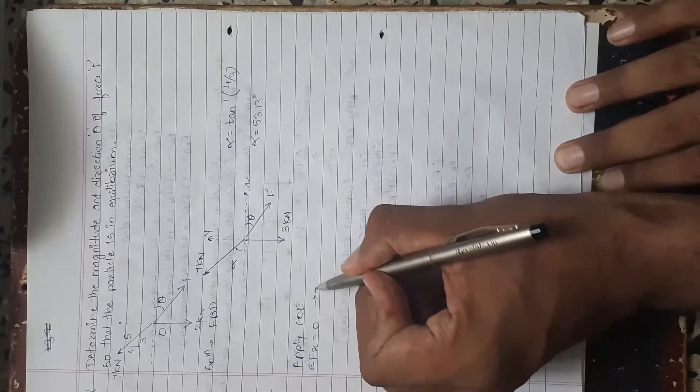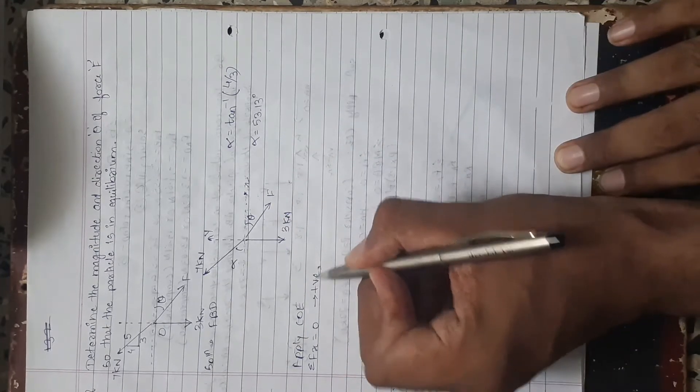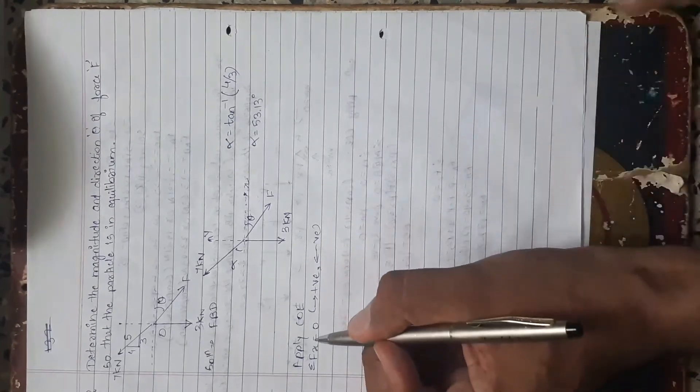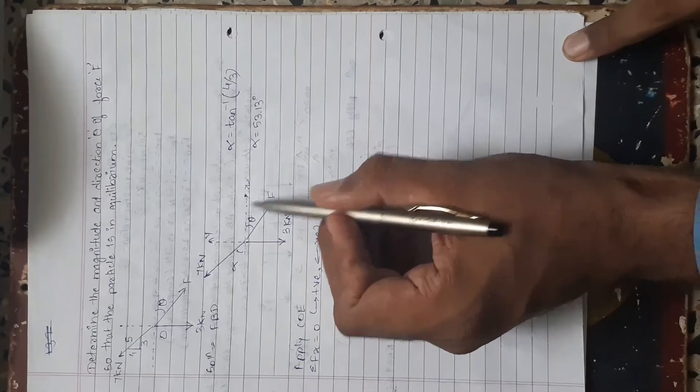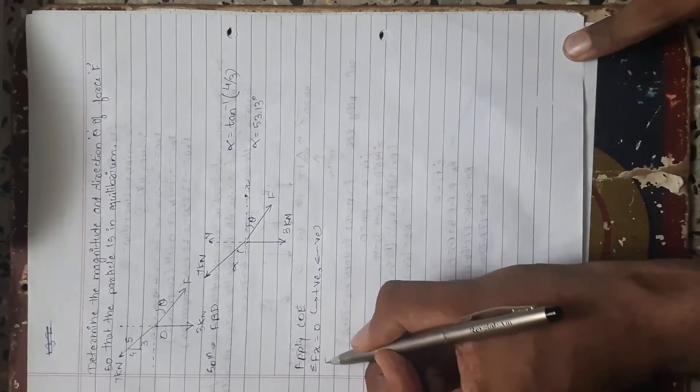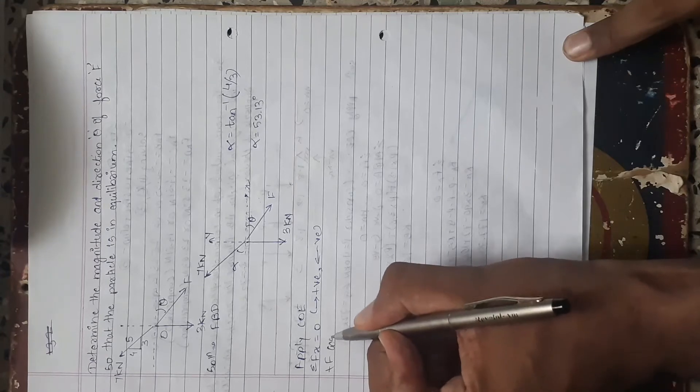We will use assumption force towards right taken positive, force towards left taken negative. So F cos alpha which is going towards right, so positive, plus F cos theta.